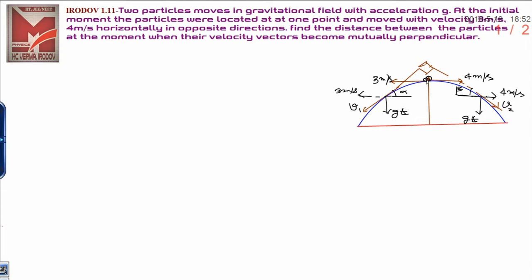With velocity 4 meter per second and 3 meter per second in opposite directions, find the distance between the particles at the moment when their velocity vectors become perpendicular.